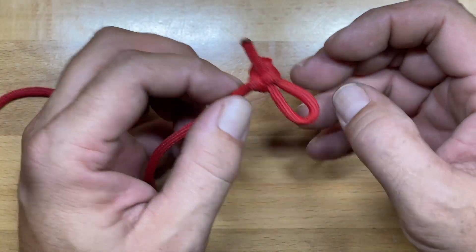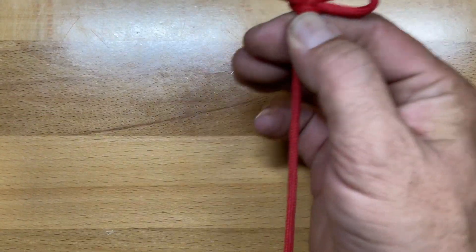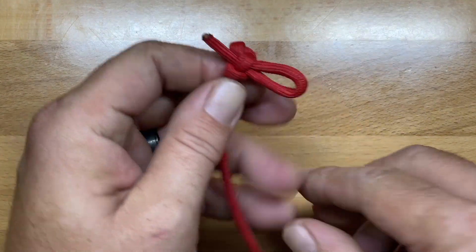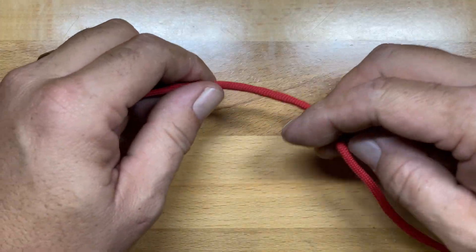It works as a stopper knot, but whenever you need a quick release, just pull on the tab and it very quickly comes off.